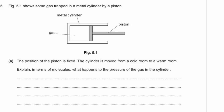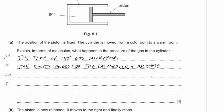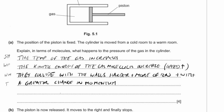Structured answer: the temperature of the gas increases, which has the effect that the kinetic energy of the gas molecules increases — because their speed increases, not their mass. This means they collide with the walls harder, producing a greater change in momentum. Therefore, the walls of the cylinder experience a greater pressure due to the change in momentum of the gas molecules.